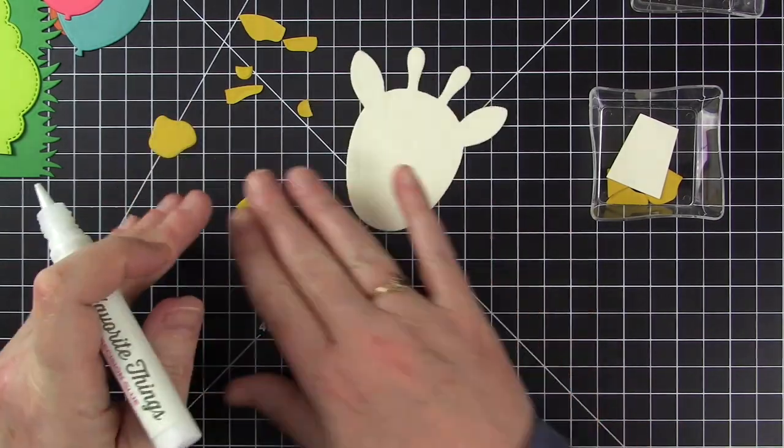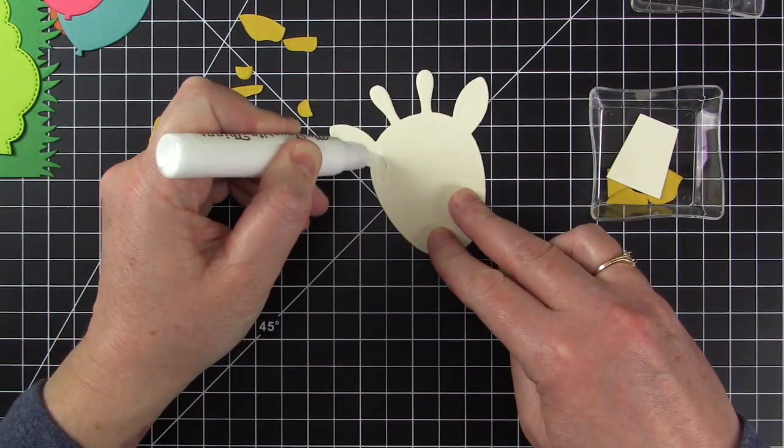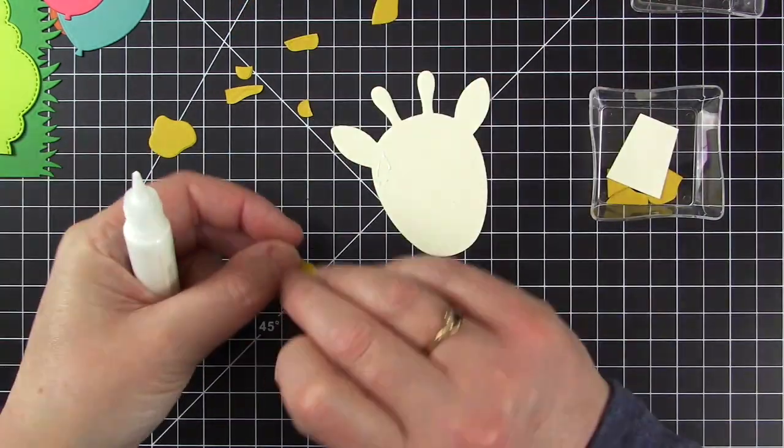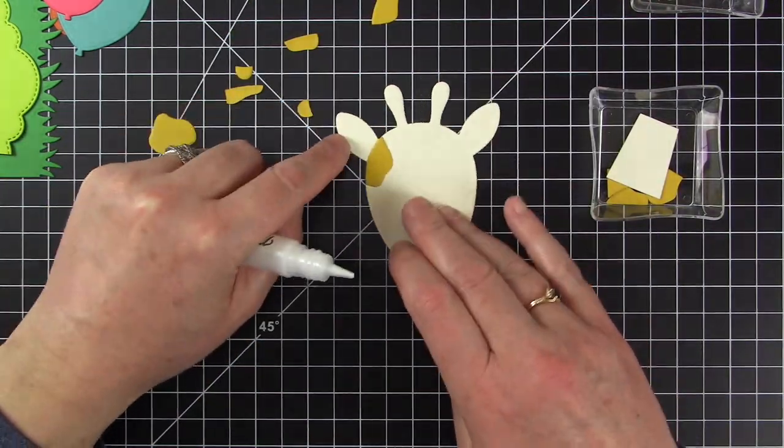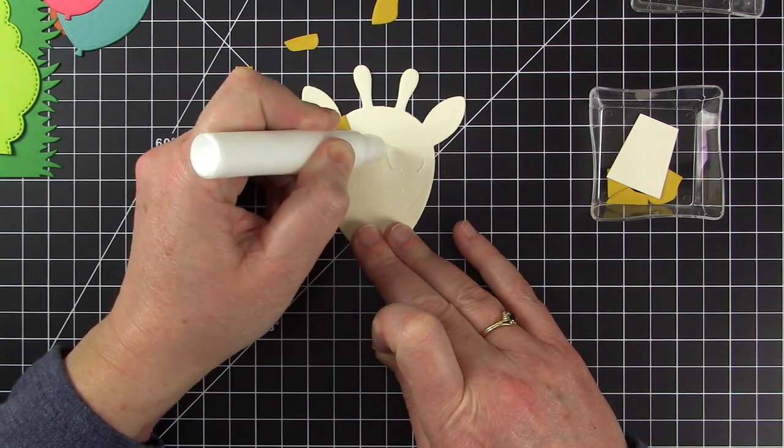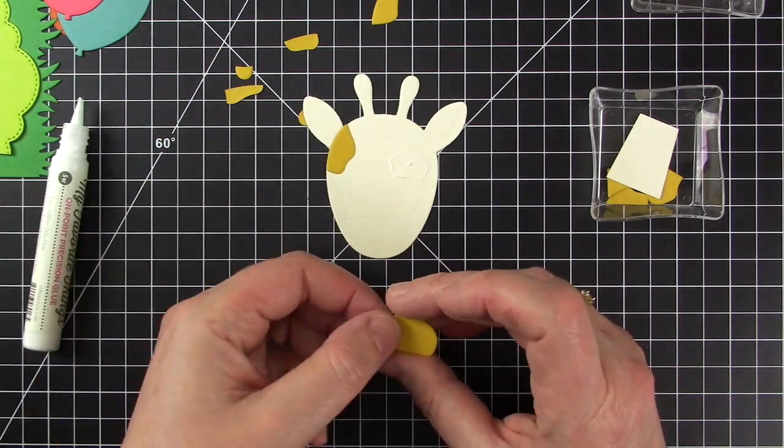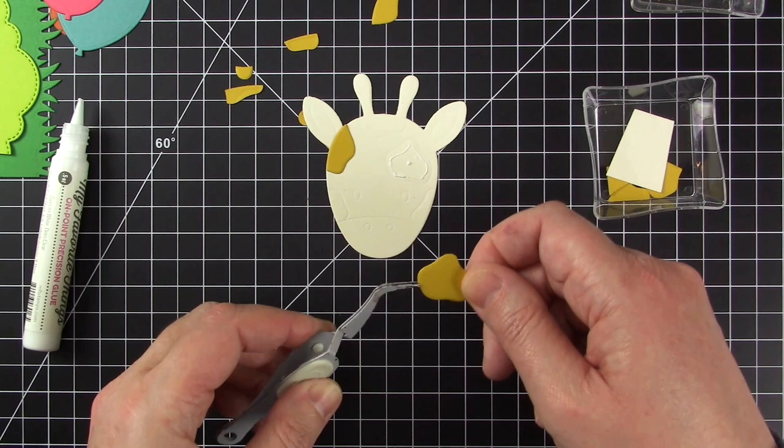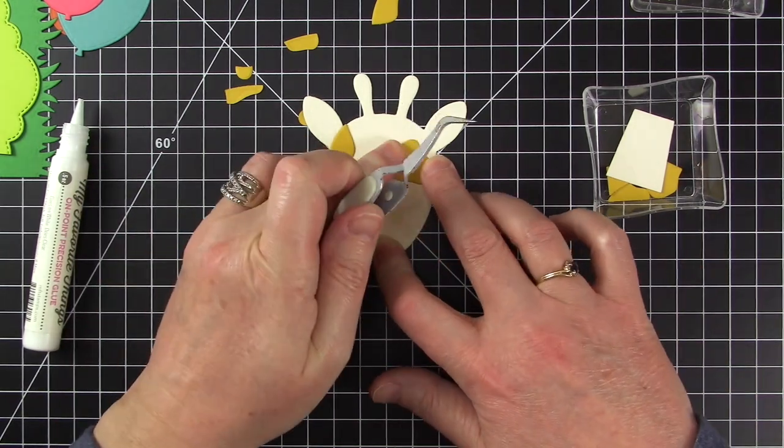I did my die cutting off screen and am now gluing the Joyful Giraffe together. I die cut the head and neck from Chantilly Cream cardstock and the spots are from Butterscotch. This giraffe is super easy to put together.